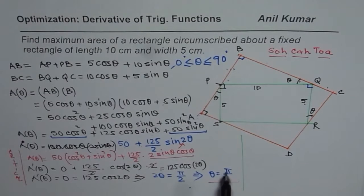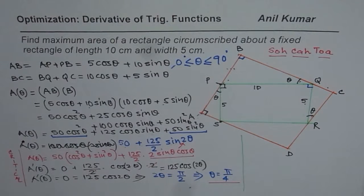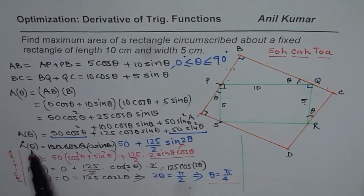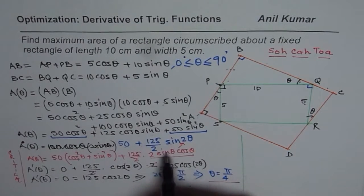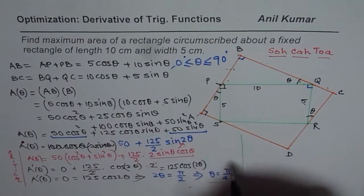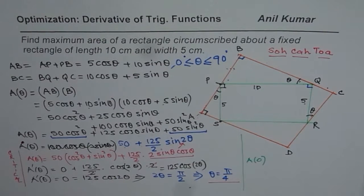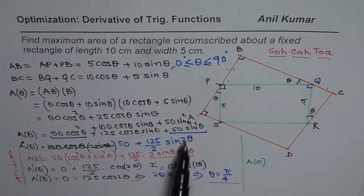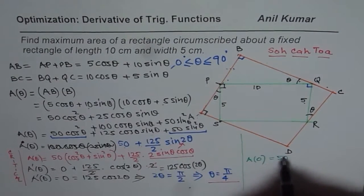We have a critical number of pi over 4 and boundary conditions of 0 and 90 degrees. We will calculate the value of the area function for all three. A(0): 2 times 0 is 0, sine of 0 is 0, so we are left with 50. So A(0) equals 50.